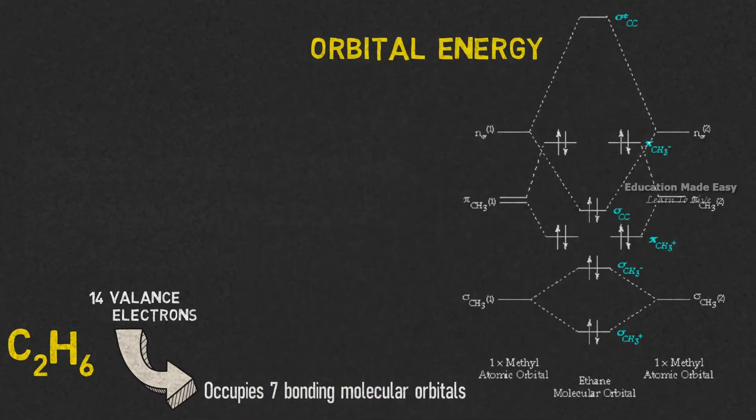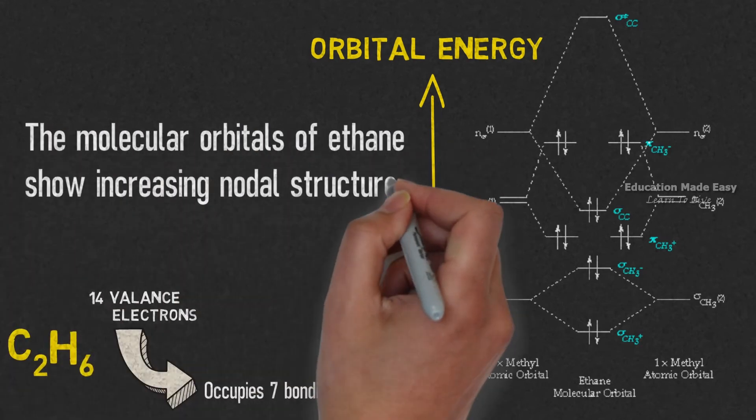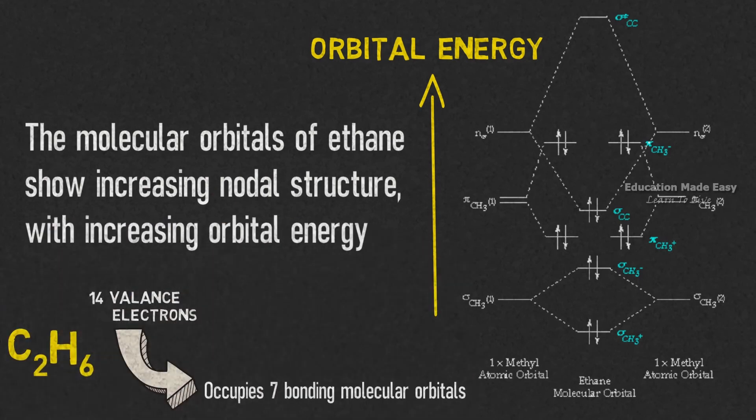The orbital energy of ethane molecule increases in the upper direction. The molecular orbitals of ethane show increasing nodal structure with increasing nodal energy.